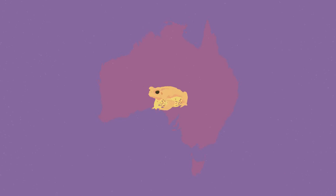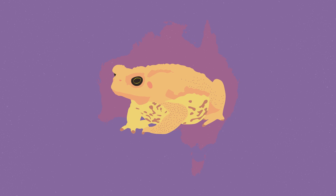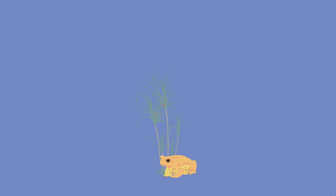Australia's fight against cane toads is probably the most widely known example of invasive species. Cane toads were originally brought to Australia to protect the sugar cane crops by feeding on cane beetles. Sadly, it didn't work and the idea went south from there. The toads quickly abandoned the sugar cane crops because they weren't able to reach the cane beetles at the top.